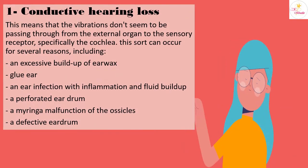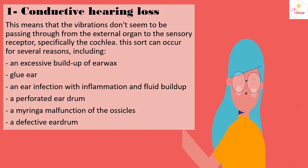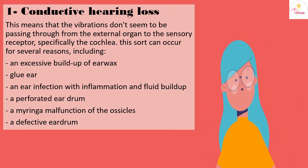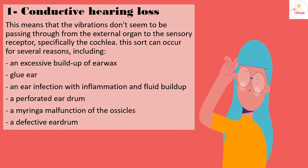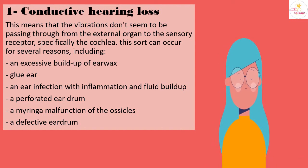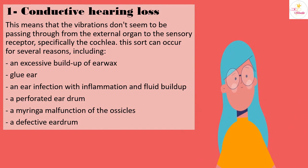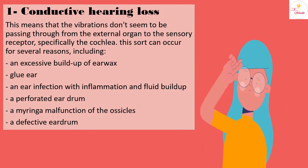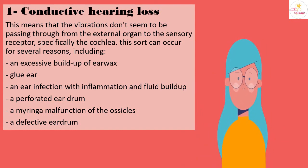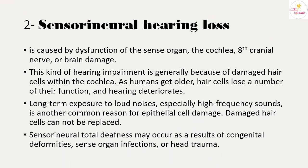There are three types of hearing loss: conductive, sensorineural, and mixed. Conductive hearing loss means that vibrations are not passing through from the outer ear to the cochlea. This can occur for several reasons including excessive earwax build-up, an ear infection with inflammation and fluid build-up, a perforated eardrum, or a malfunction of the ossicles.